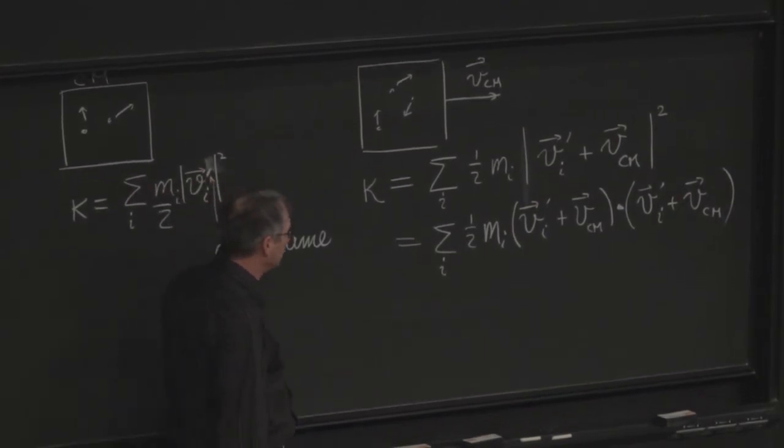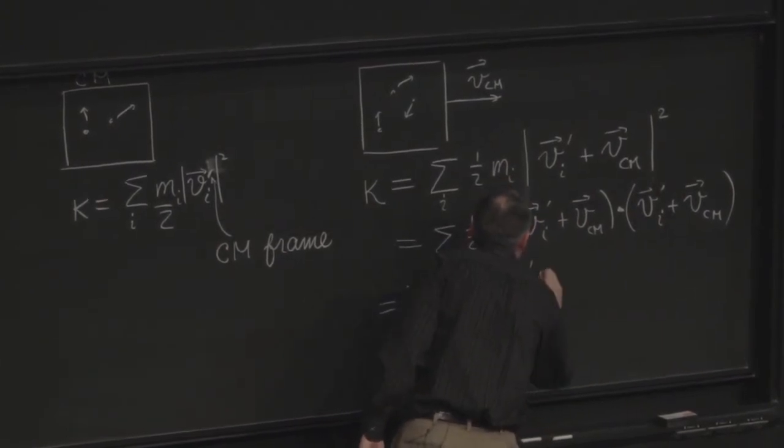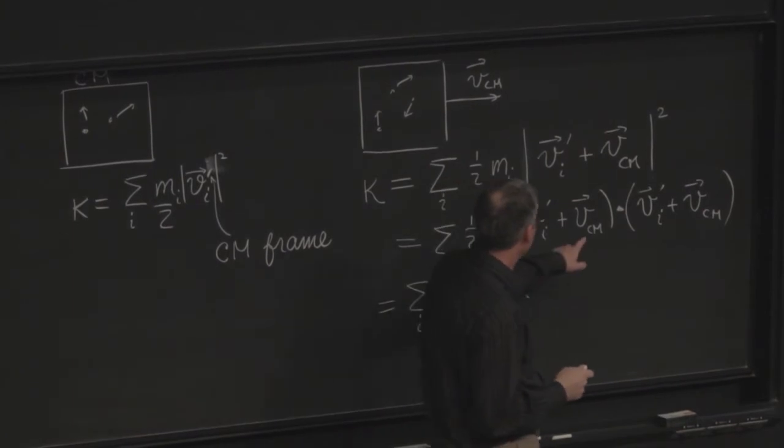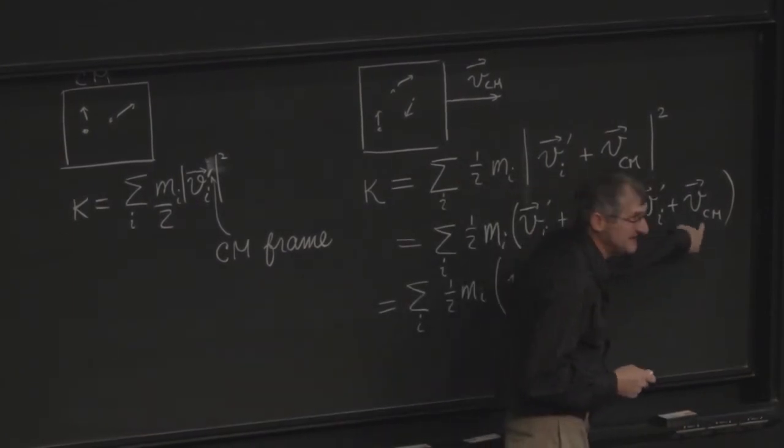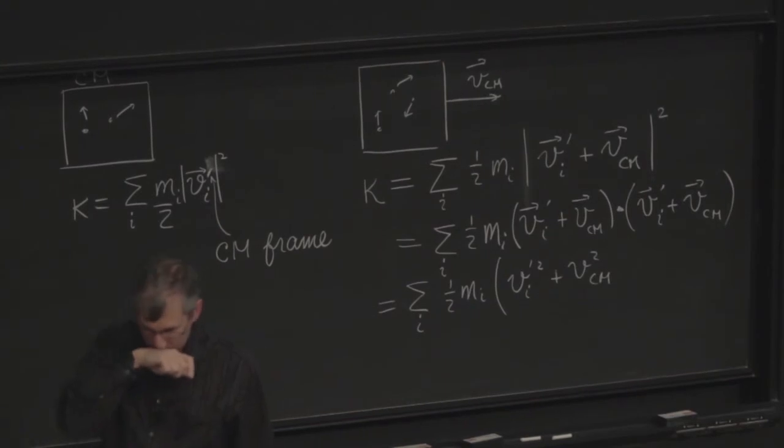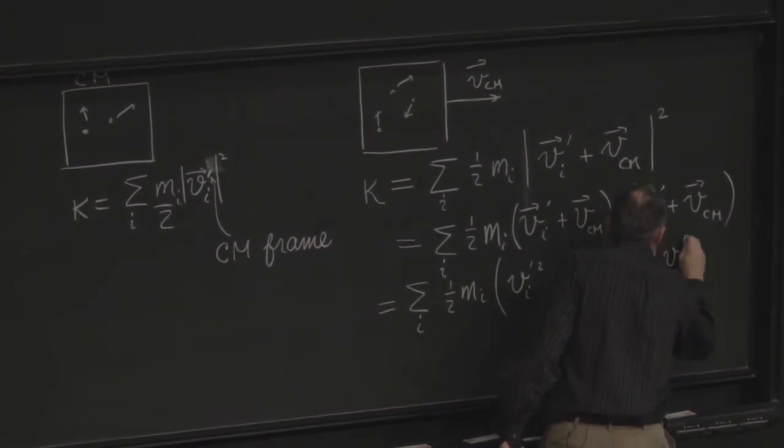How many terms? I think that's really only going to give us three terms, because two of them will be the same. So the sum on i of 1 half m sub i, v prime i dot v prime i is just v prime i squared. That's just the magnitude squared of v prime i. The second term dotted into the second term is just v squared for the center of mass. And now I have twice the cross term: v prime i dot v center of mass.